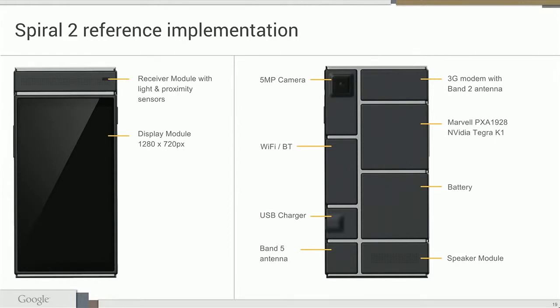This is our reference design, but the ARA device does not require the user to put it that way. Theoretically, the user can put any module in any orientation and location as they want. However, some modules do have preferred locations. For example, when the user holds the phone, they don't want the antenna or camera lens covered by their hand. That creates a better user experience.